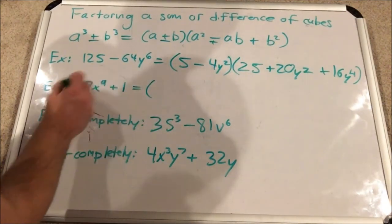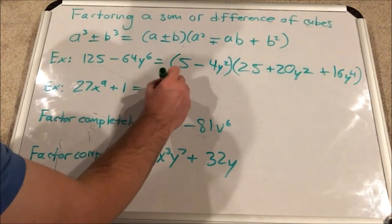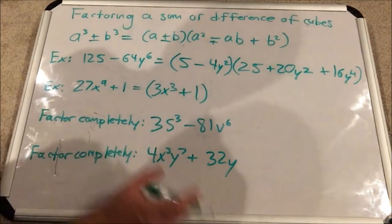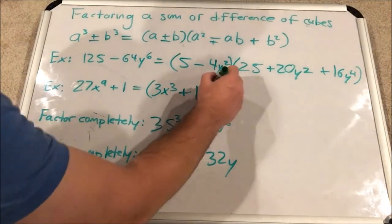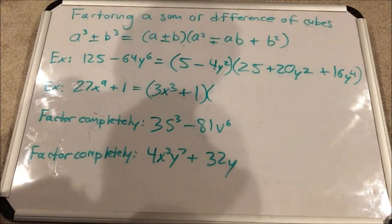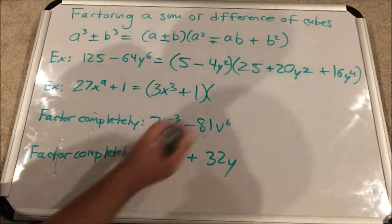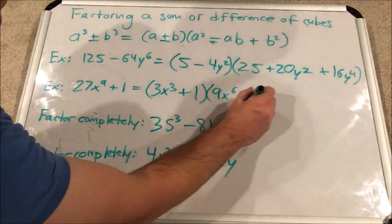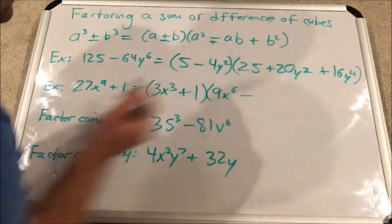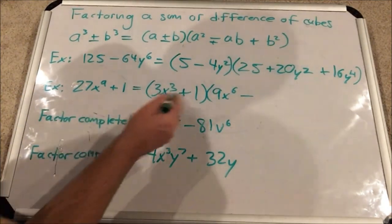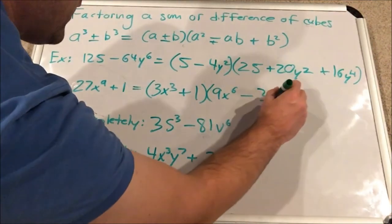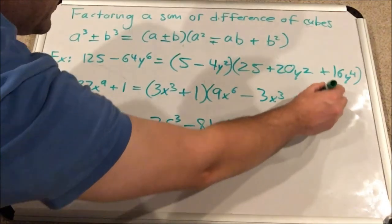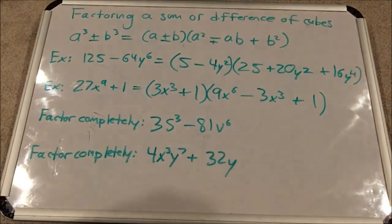So this will equal the cube root of this, which is 3x to the 3rd plus 1. I know I'm repeating the 1 because 1 is its own cube root. Next we have 3x to the 3rd squared. So that's 9x to the 6th. Opposite sign now. Same sign. Opposite sign. Always positive coming up. Multiply these two together. You just get 3x cubed. Always positive. Square the 1. You get 1. Okay. Awesome.